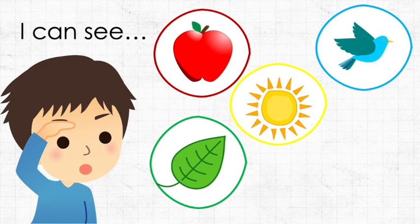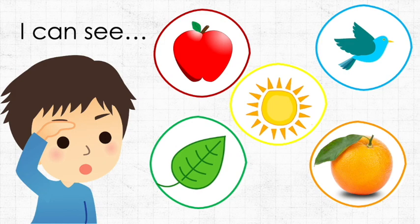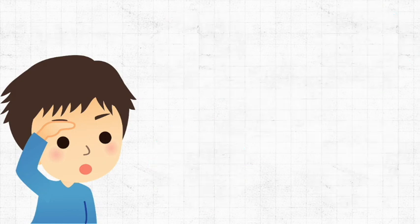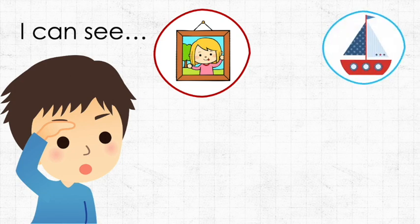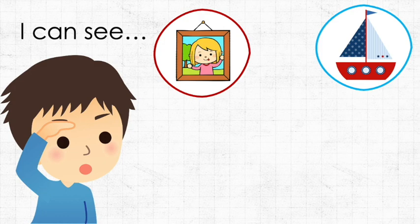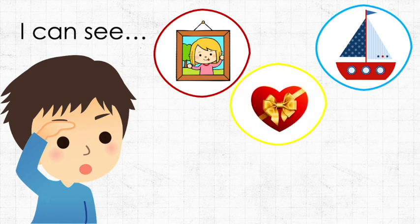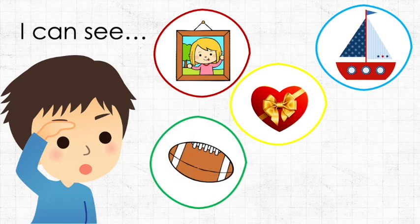Our eyes also help us see shapes. We have the picture frame which is the shape of a square, the boat which is the shape of a triangle, this gift box which is the shape of a heart, this football which is the shape of an oval, and this book which is the shape of a rectangle.